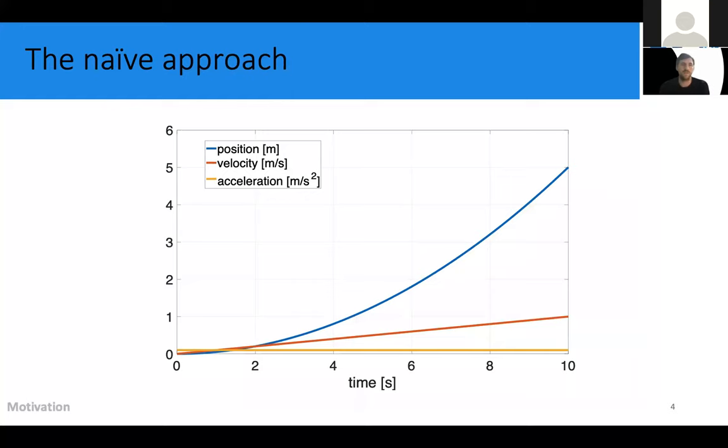So to give a bit more insight into the problem, IMU sensors do measure acceleration. And a naive approach could be to solve this global positioning problem by just integrating the acceleration signal. You could integrate the signal twice and then reconstruct the global displacement.